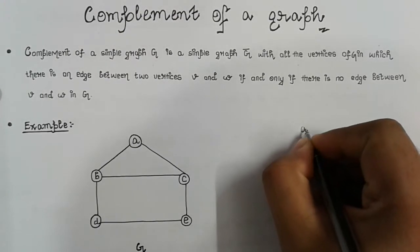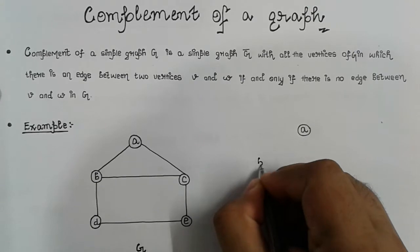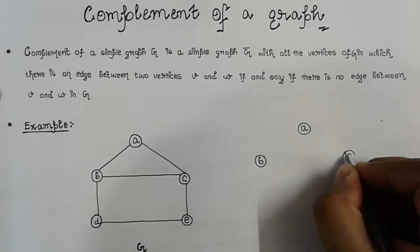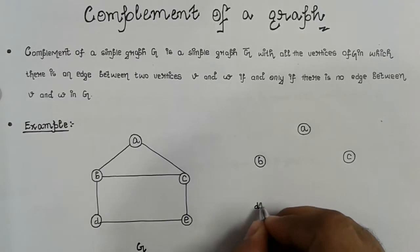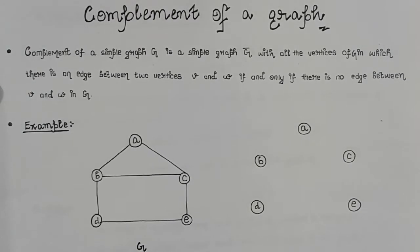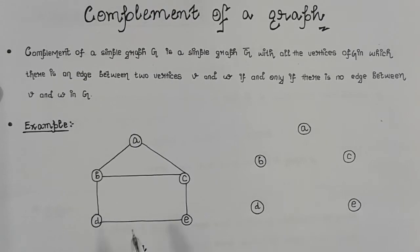So this is our vertex A, and then this is vertex B, and then this is vertex C, and then this is vertex D, and then this is vertex E. So we have all vertices drawn which are in the originally given graph G. Now we have to draw those edges which are not present in the originally given graph G.